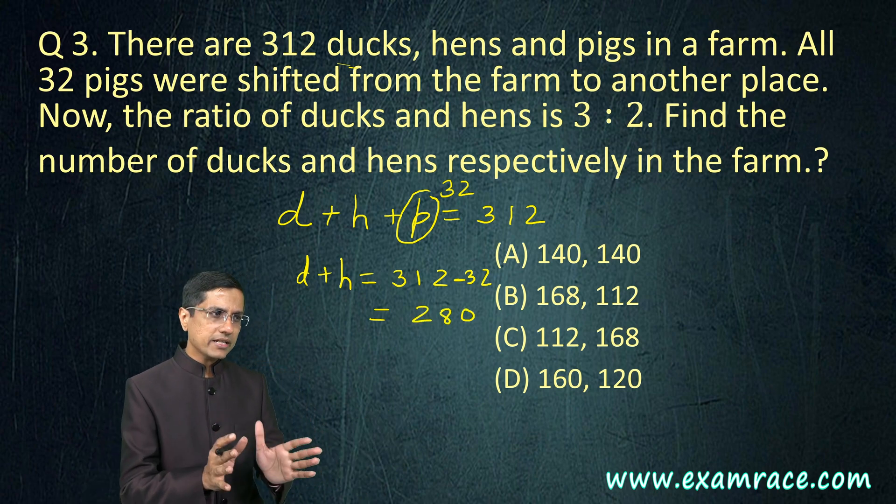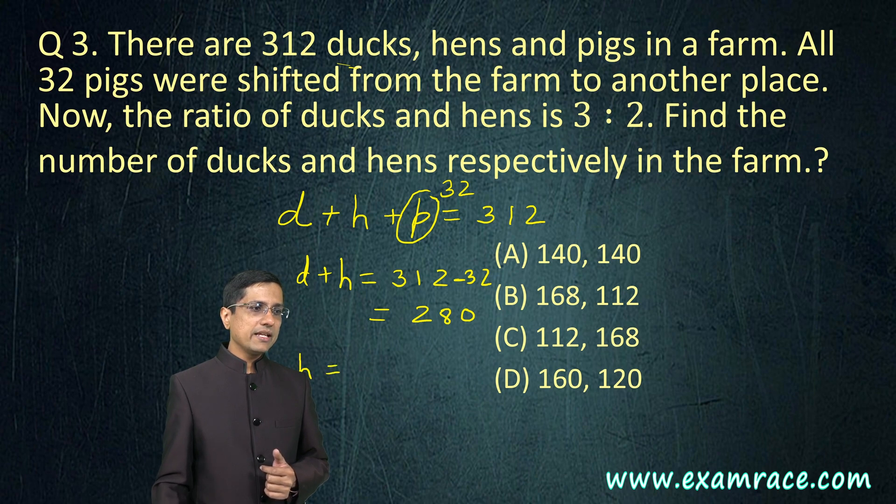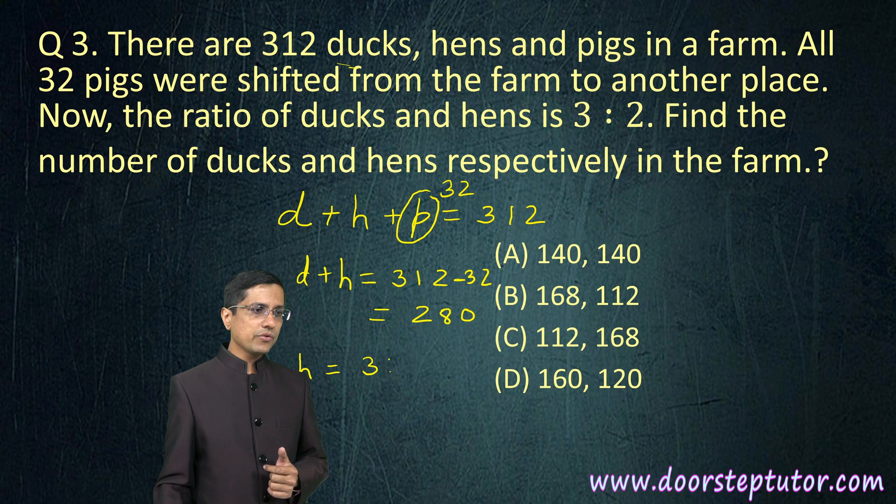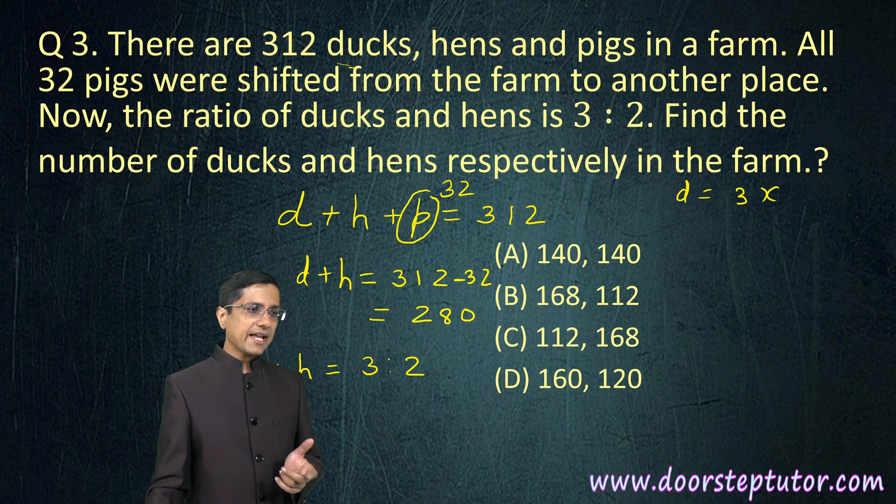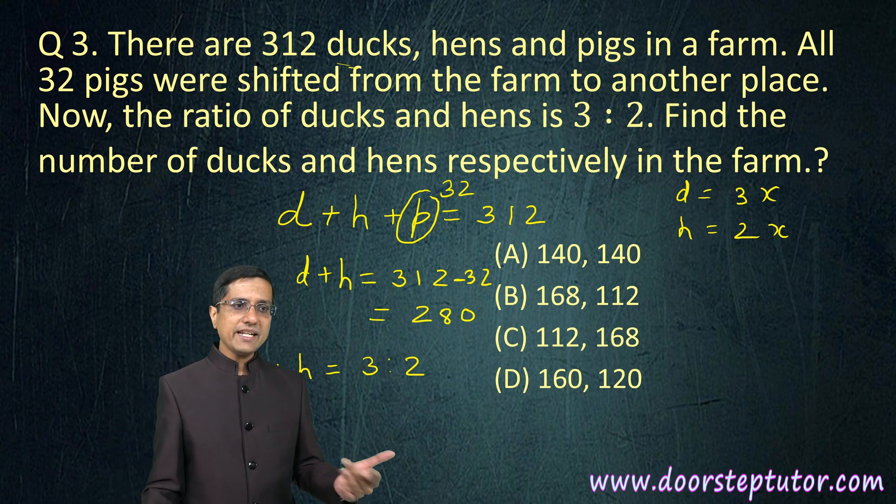Let's first try to find out: if the pigs are 32, then ducks plus hens is 312 minus 32, and this comes out to be 280. Ratio of ducks and hens is 3 is to 2. So if I assume that the ducks is 3x, then hens becomes 2x because then the ratio of 3 is to 2, x and x would cancel.